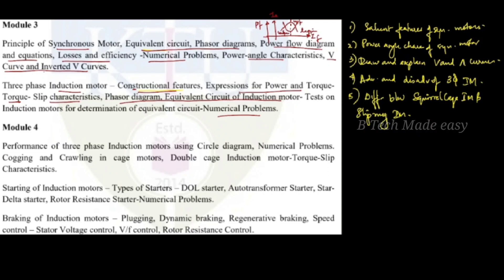Slip is the change of synchronous speed. The slip formula: Ns is the synchronous speed, minus N, the speed of the rotor, divided by Ns, the synchronous speed, into 100.